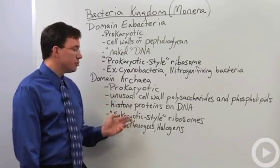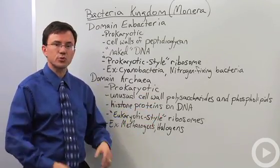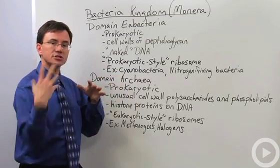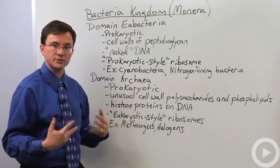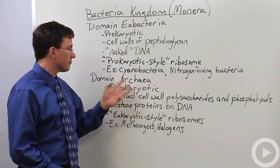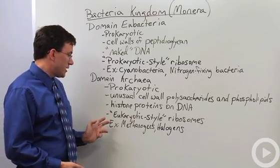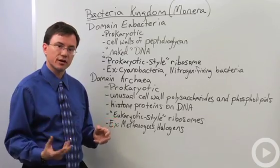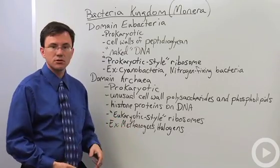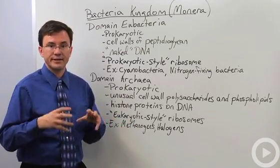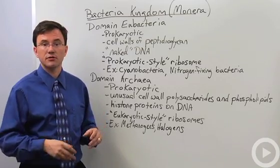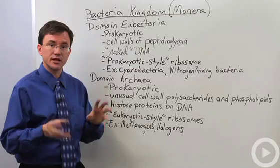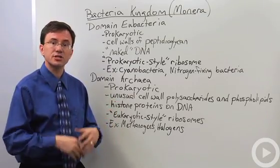They have eukaryotic-style ribosomes. These two factors are one of the major reasons why scientists now think that ultimately the eukaryotes, like ourselves and plants, ultimately evolved from the archaea. They also have a number of different roles in the environment. Many of them are methanogens, which means they're the things that in your large intestine, and especially in the large intestine of things like cows, are breaking down some of the undigested polysaccharides to produce methane.